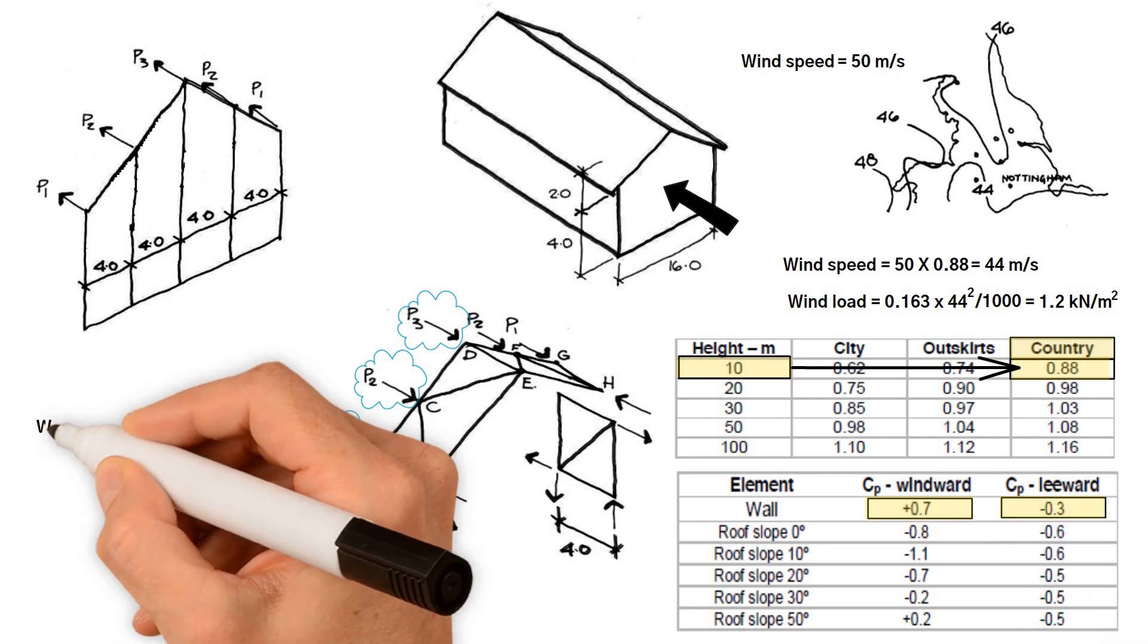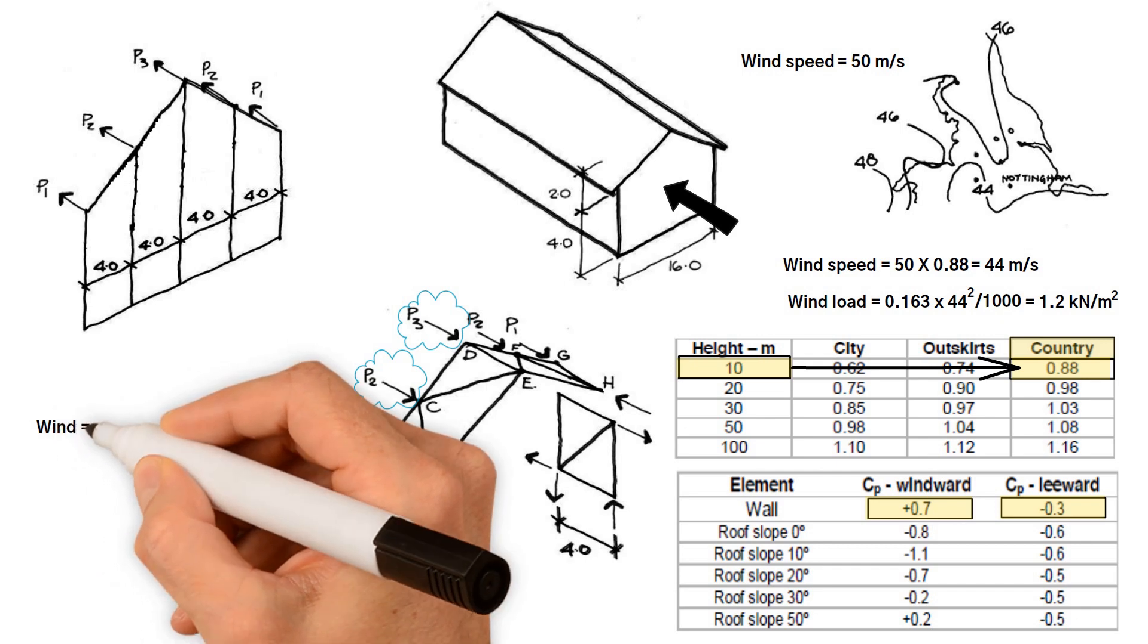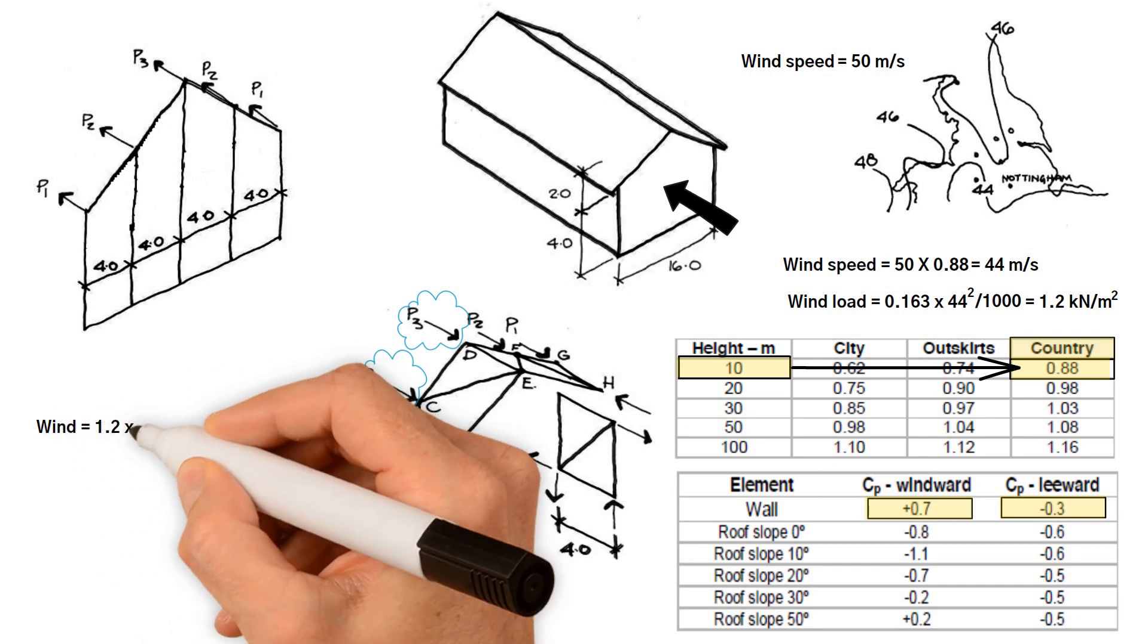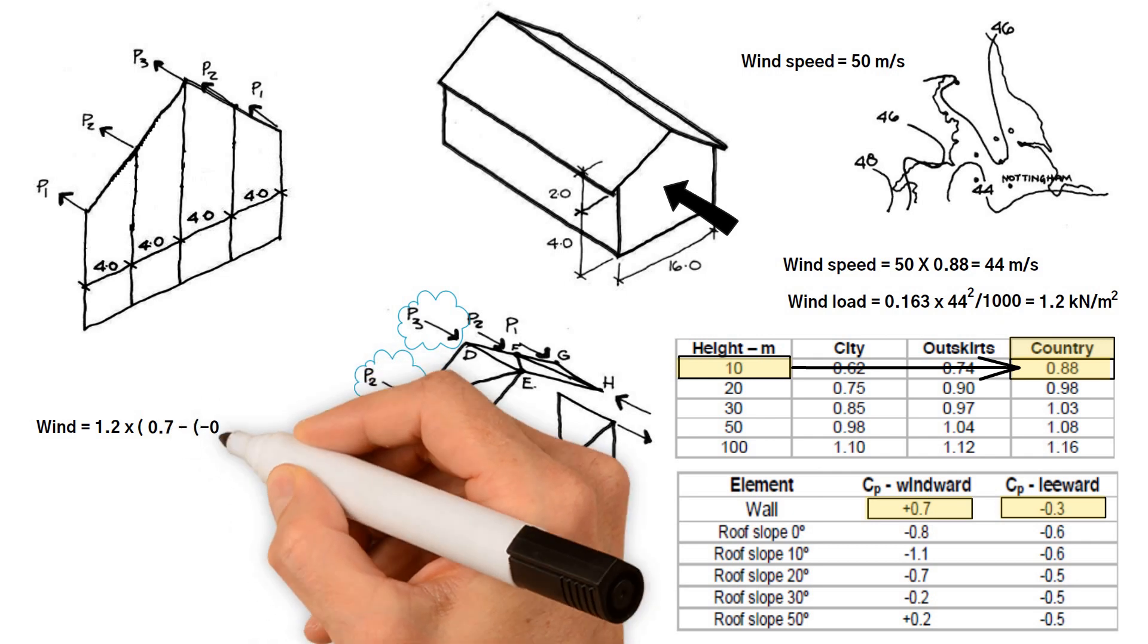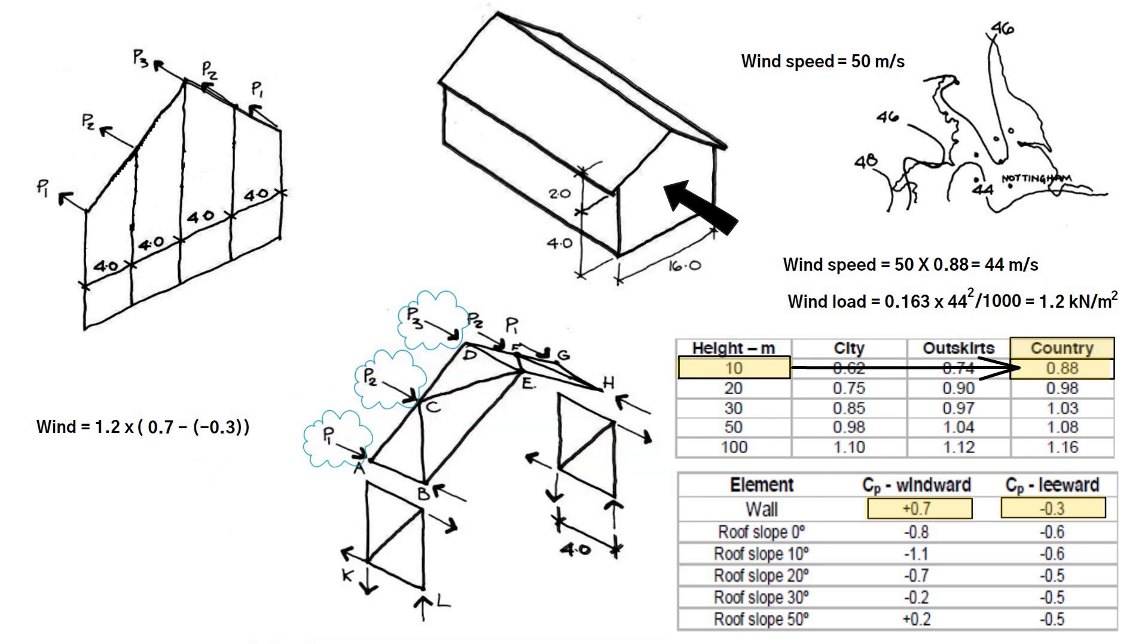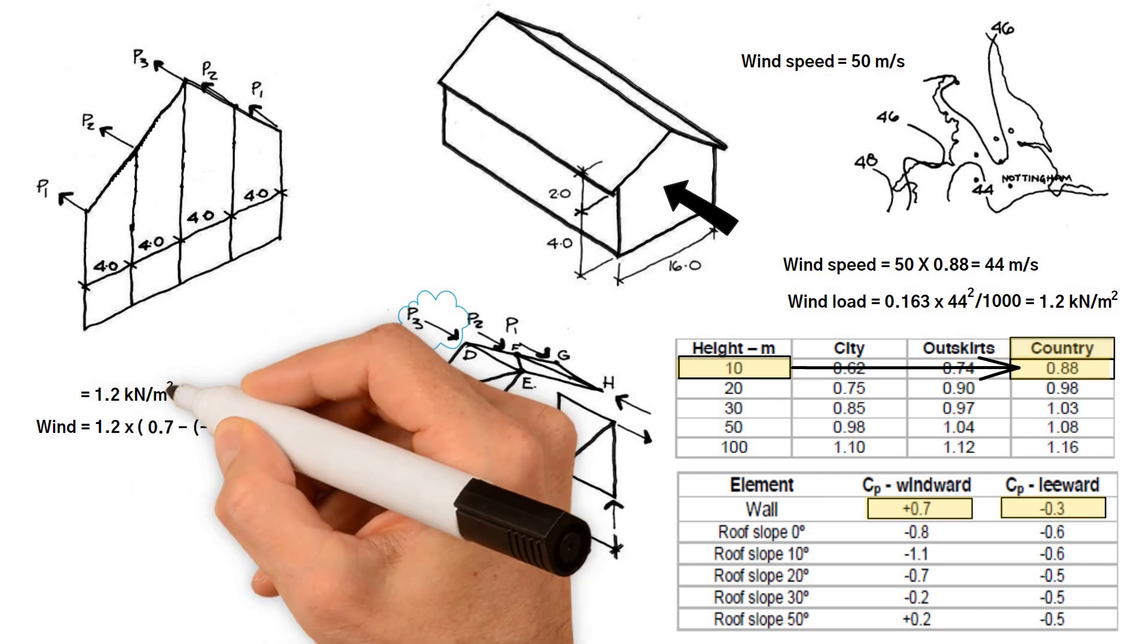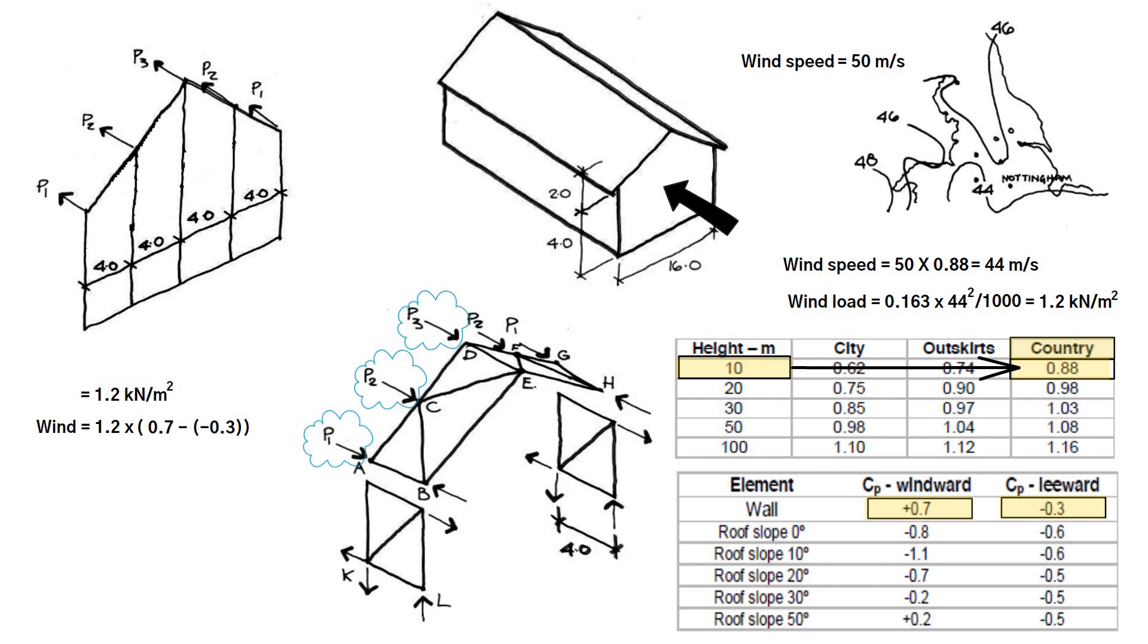Hence, wind load on end walls equals wind pressure 1.2 kilonewtons per meter squared times (positive 0.7 minus negative 0.3). Therefore, we get 1.2 kilonewtons per meter squared applied load. Now we should be able to calculate the forces P1, P2, and P3.